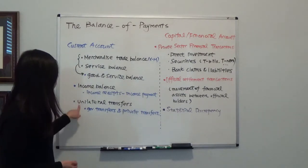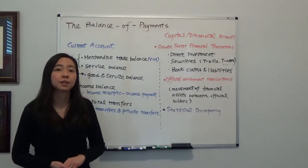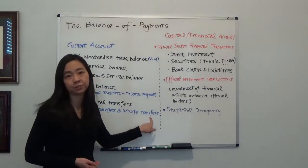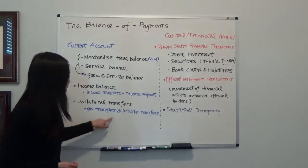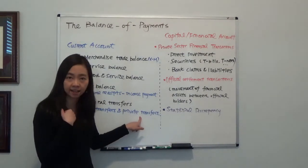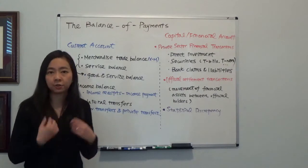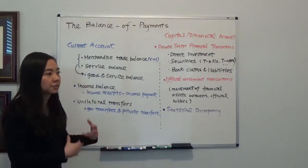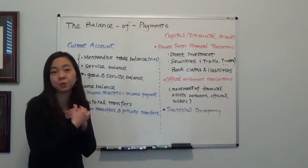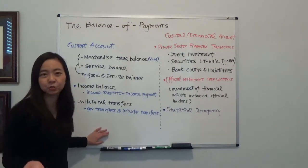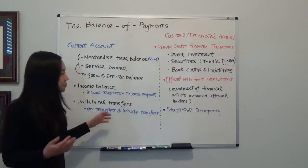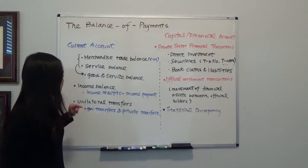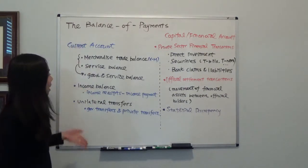The last item is unilateral transfers, which is the sum of government transfers and private transfers. In general, this item for the United States is negative because the U.S. is a very rich country. So in general, the U.S. gives foreigners more than foreigners give the U.S. It's not because others are trying to take advantage of us — it's just because the U.S. is in general a very wealthy country. So that's our current account.